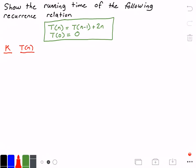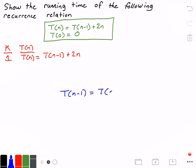Let's get started with our first step. When k = 1, our function t(n) is equal to t(n-1) + 2n, taken directly from the recursive case. To go to the next step we need to figure out what t(n-1) is, by substituting n-1 into the recursive case. So t(n-1) = t(n-1-1) + 2(n-1), which simplifies to t(n-2) + 2(n-2).